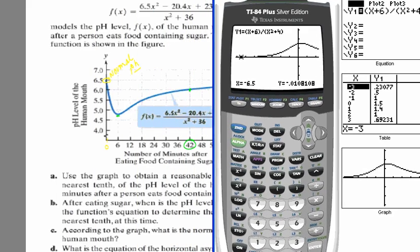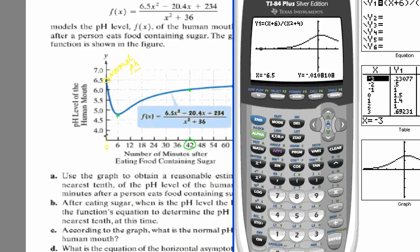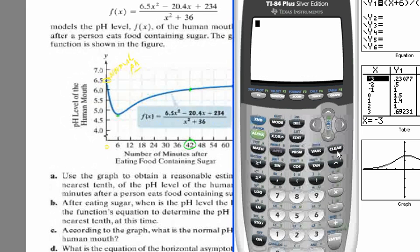Okay, let me get that function up here, and we're finding out what's happening at 6. So let's just go to a clear screen. Let's use our parentheses, and it's going to be 6.5 times the number we want. We're putting in 6 minutes, 6 squared, minus 20.4 times 6, plus 234. And it's that quantity divided by x squared plus 36. 6 squared plus 36.